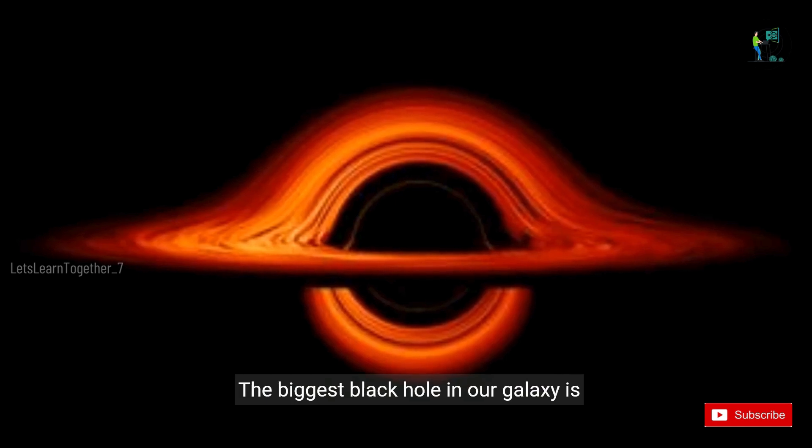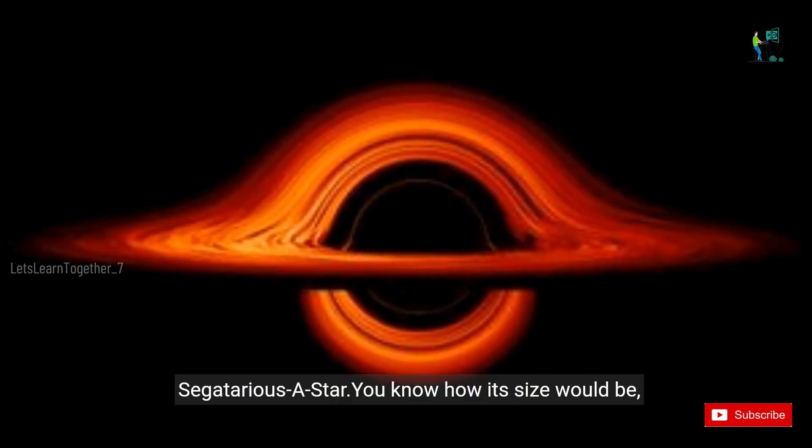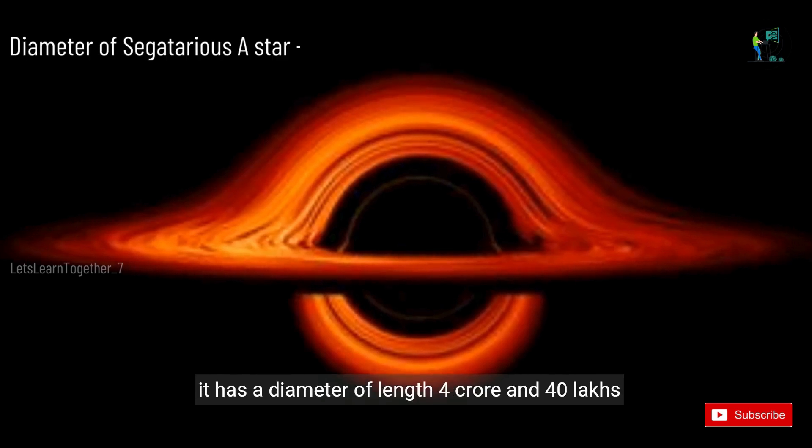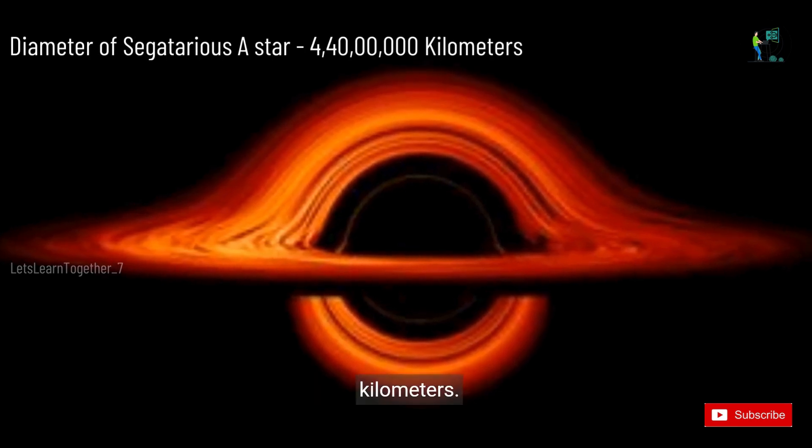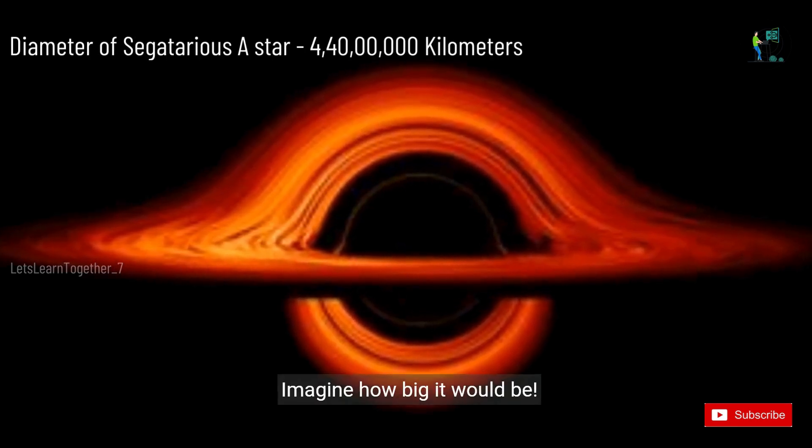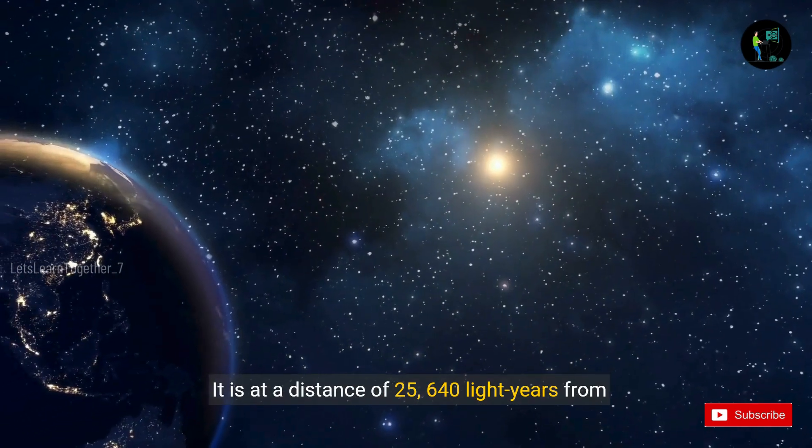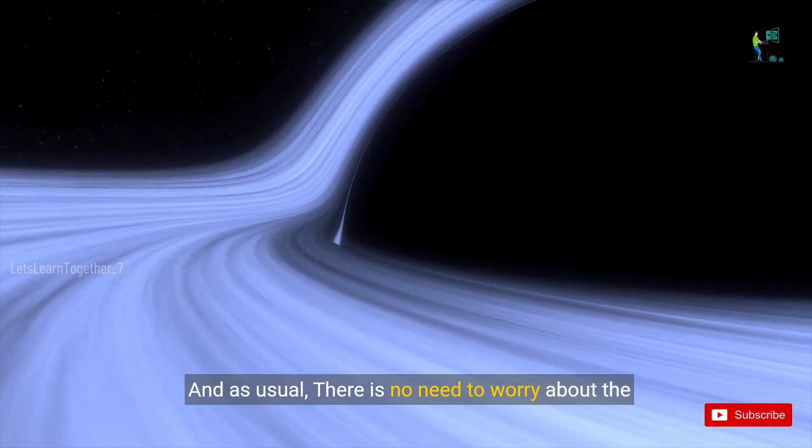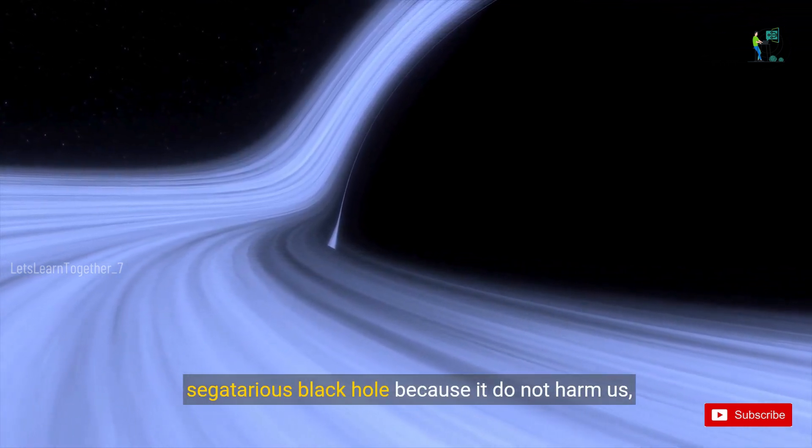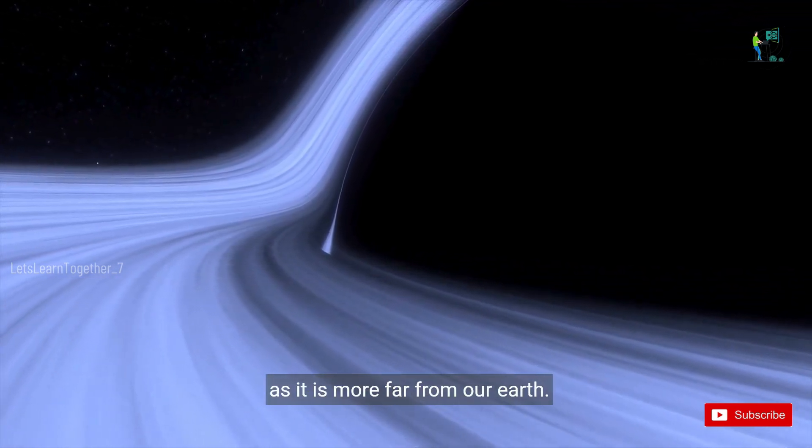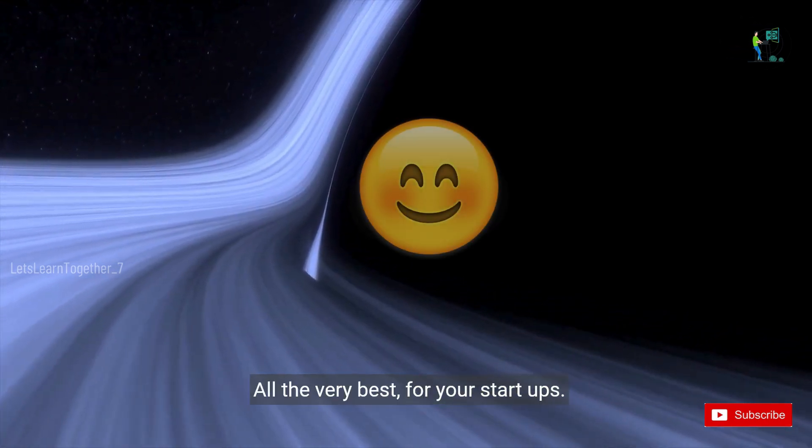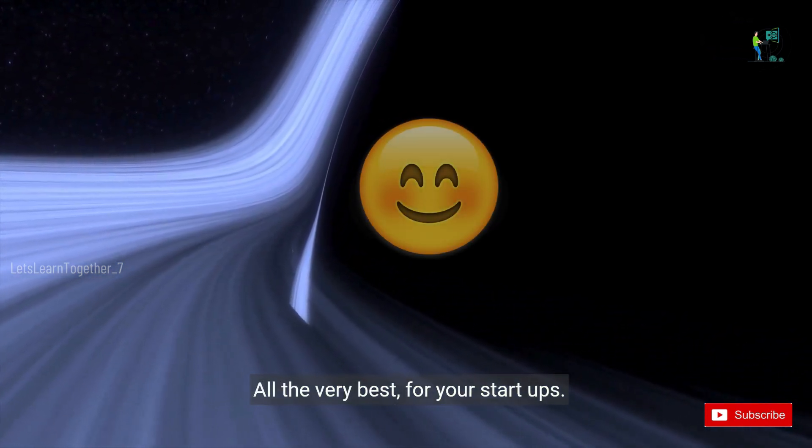The biggest black hole in our galaxy is Sagittarius A star. You know how its size would be. It has a diameter of length 44 million kilometers. Imagine how big it would be. It is at a distance of 25,640 light years from Earth. And as usual, there is no need to worry about the Sagittarius black hole because it does not harm us as it is far from our Earth. So you can happily start your startups. All the very best for your startups.